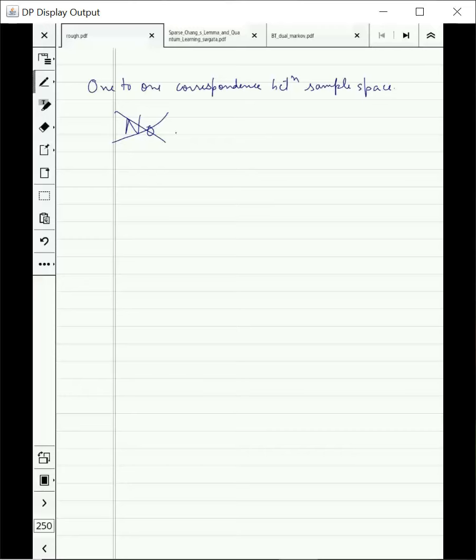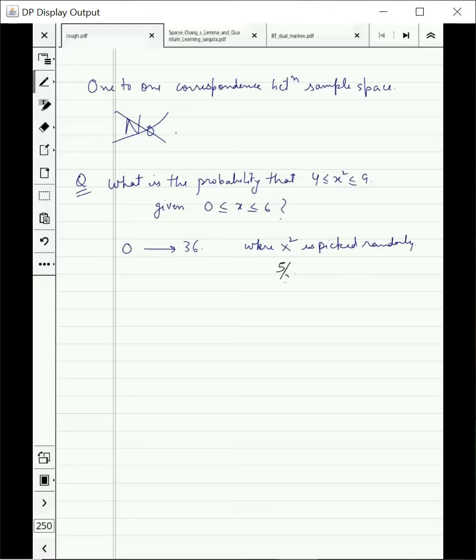What is the probability that x^2 lies between 4 and 9, given I pick x between 0 and 6? There are two ways to think of this question. One is the sample space of 0 to 36 where x^2 is picked randomly. In this case, x^2 will be between 4 and 9 and the probability would be 5/36. On the other hand, you have sample space 0 to 6 where you pick x randomly. In this case, x should lie between 2 and 3 and the probability would be 1/6, which is different. This is a much simpler example and it shows that having one-to-one correspondence in sample space is not enough. We should define the sample space clearly and define the probability measure.